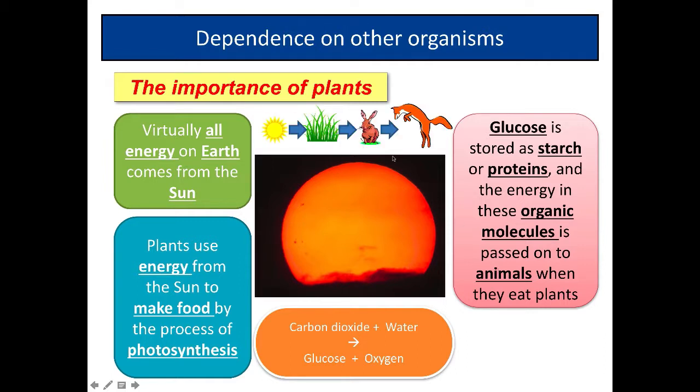Looking at a simple food web, the sun's energy is trapped by plants in photosynthesis. Rabbits eat them, consuming that energy, and the rabbits in turn are eaten by the fox. The sun's energy passes through this food chain, showing how the sun's energy is so important to life on Earth.